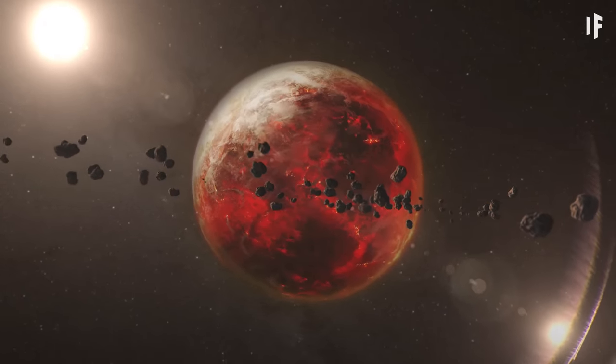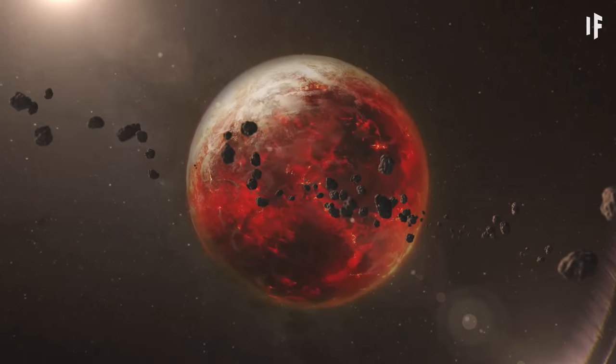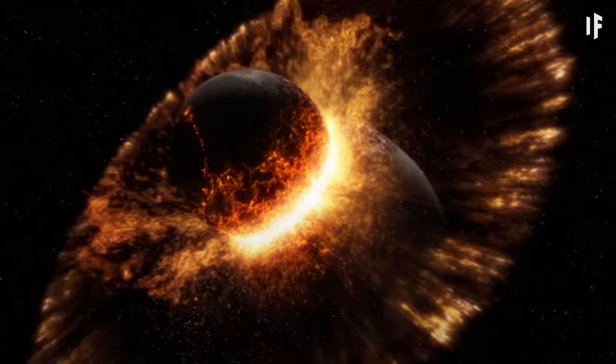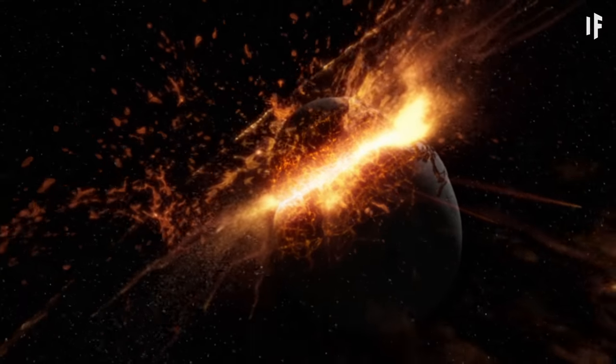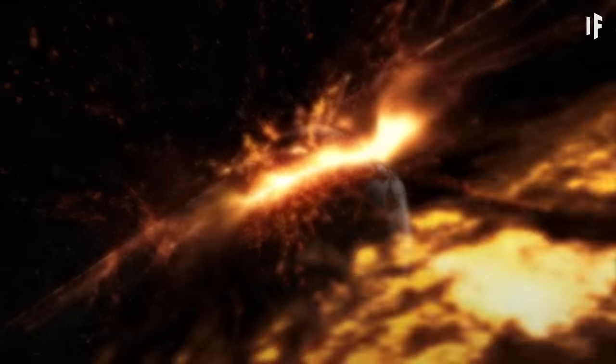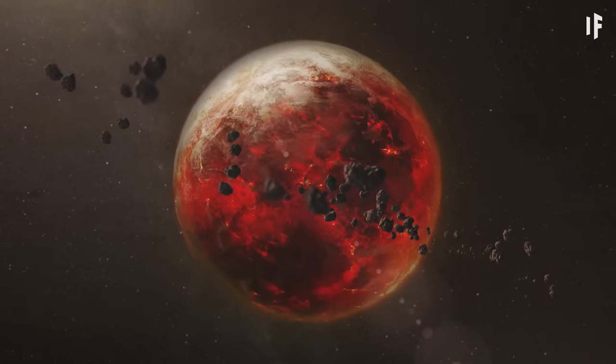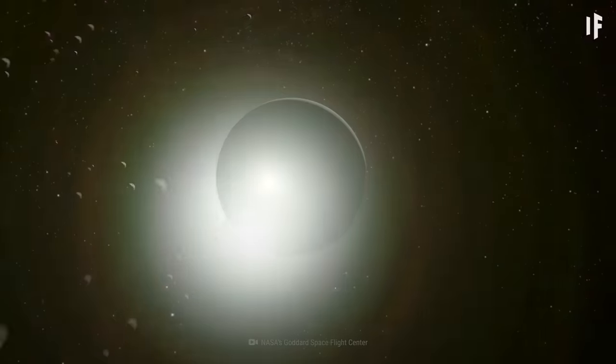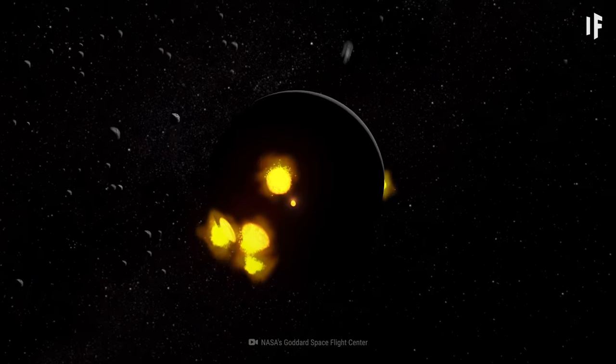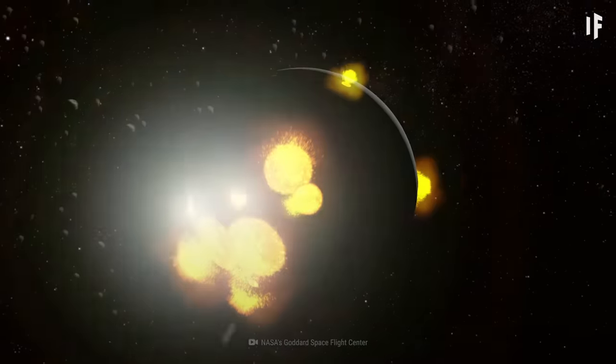When the Earth was young, it most likely had a ring of rock debris around it. Four and a half billion years ago, another planet, Theia, hit the Earth. The giant impact sent a ring of matter hurtling into the Earth's orbit. But it didn't stay like that for long. The rocky debris soon formed another celestial body, the one we now call the Moon.